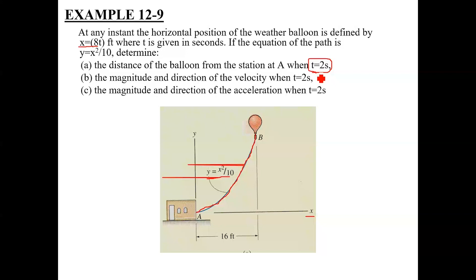Now there are two ways to solve this. The first is a simple and easy way, because you have to define x as a function of time. As you have seen in the formula, before we talk about velocity or acceleration, there are single derivatives or double derivatives involved: x-dot, y-dot, z-dot, x-double-dot, y-double-dot, z-double-dot. When we talk about dot, they are basically the derivative with respect to time.